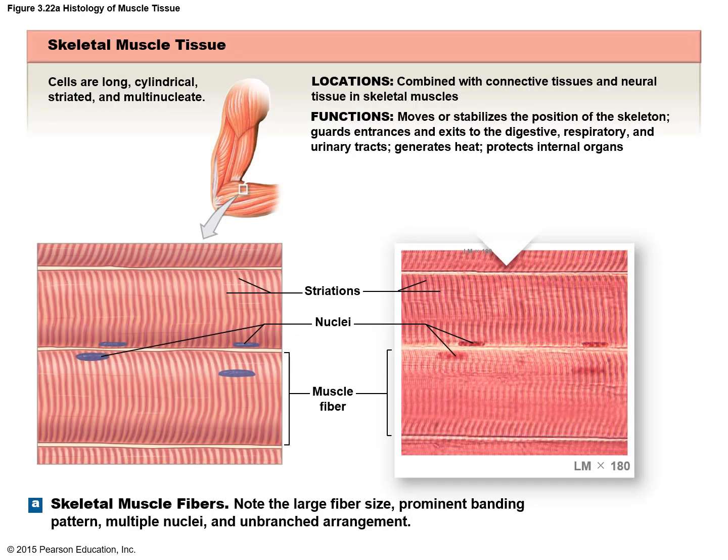This figure shows the shape of the skeletal muscle. It is long and tube-like with vertical stripes which are the striations, and you can see that one cell has more than one nucleus. The nuclei are shown in blue color.